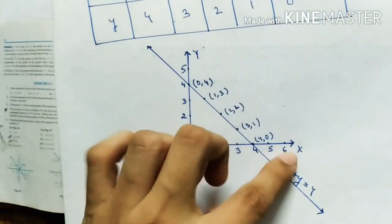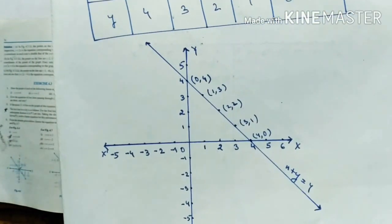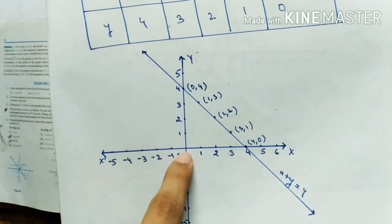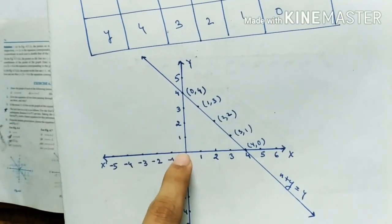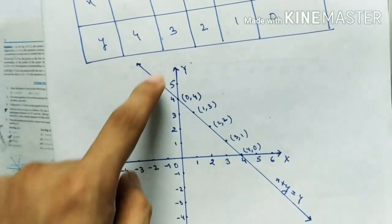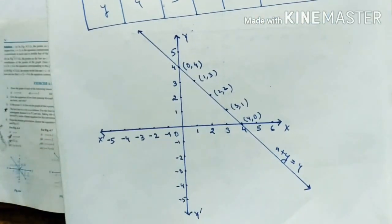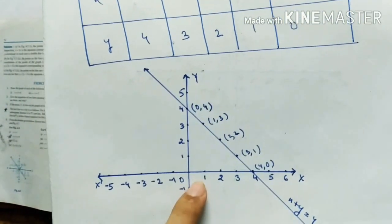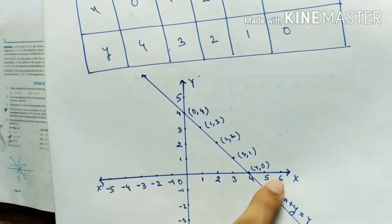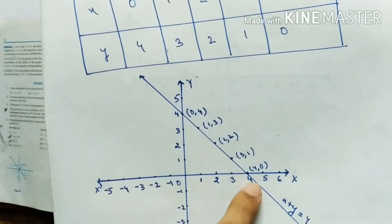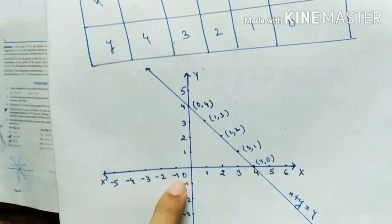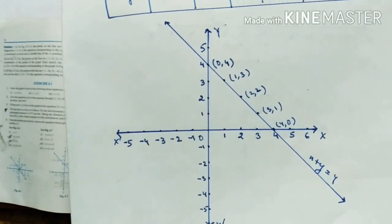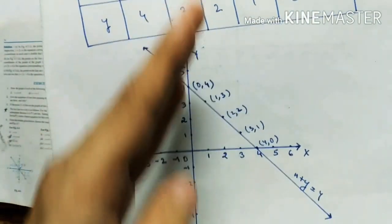With the help of a scale, I will draw the x-axis and y-axis. This is x, this is O (the origin), this is the x-axis and x-dash, and this is the y-axis and y-dash. Using a scale of 1 centimeter, mark 1, 2, 3, 4, 5, 6 and also minus 1, minus 2, minus 3, minus 4, minus 5 on both axes.